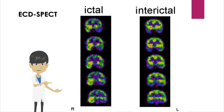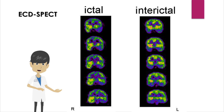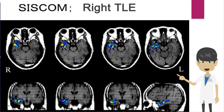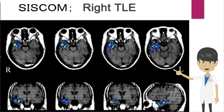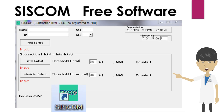This is a case of right temporal lobe epilepsy. The right temporal lobe shows decreased perfusion during the interictal phase, while showing increased perfusion during seizures. Here are the results of the SISCOM processing in this case. By superimposing the T1-weighted image, the anatomical location of the increased perfusion can be determined. SISCOM can be found in several image analysis software packages.